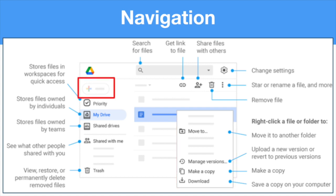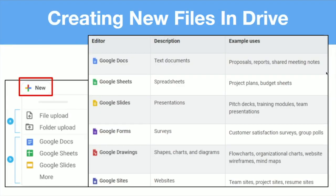Since all of the Google Workspace for Education tools are connected to your Drive, there is an option within Drive to create a new file from any of those tools by clicking the Plus New button in the top left-hand corner. Clicking that will bring up a submenu allowing you to upload a file or folder from your device, or create a new Google Doc, Sheet, Slide, Form, Drawing, or Site. We'll get a bit more into these different file types soon.